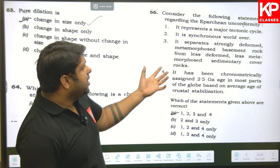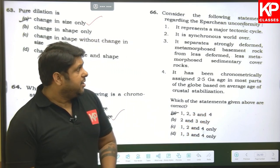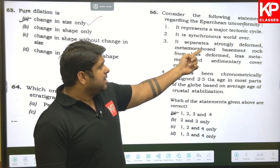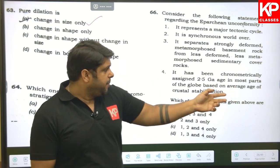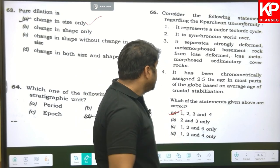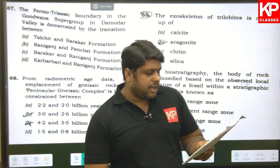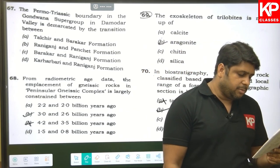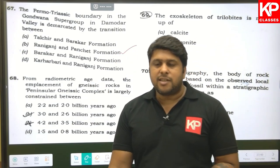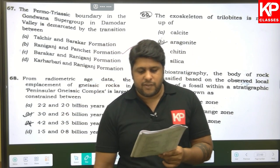Question sixty-four: which is a chronostratigraphic unit? The answer is stage. Question sixty-five: regarding the Precambrian Unconformity — it represents a major tectonic cycle (correct); it is synchronous worldwide (correct); it separates strongly deformed metamorphic basement from less deformed rocks above (correct); it has been chronometrically assigned a 2.5 Ga age (correct). All statements are right. Question sixty-seven: the Permo-Triassic boundary in the Gondwana Supergroup in the Damodar Valley is demarcated by the transition between the Raniganj and Panchet formations — this was covered in the unconformity lecture two days ago.